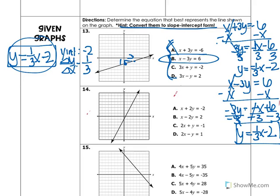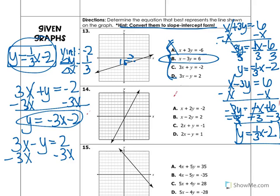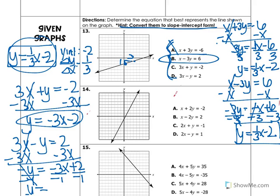You don't have to continue to c and d, but for extra practice: for c, 3x plus y equals negative 2 — just subtract 3x and y is already by itself, giving y equals negative 3x minus 2. For d, 3x minus y equals 2 — subtract 3x from both sides to get negative y equals negative 3x plus 2. Since y can't be negative, divide by negative 1, giving y equals positive 3x minus 2.